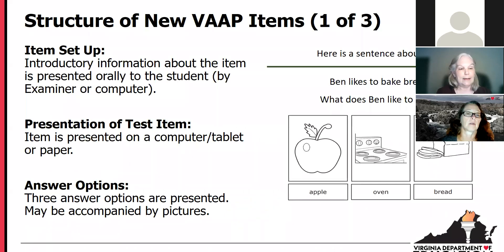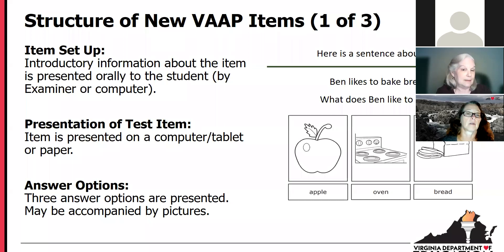We're going to start with a reading item, but the structure of the VAP items is similar regardless of content. On the left-hand side of the screen, you'll see the template for each of the items. There's an item setup — text that is either read to the student by the computer or a human reader, the test examiner — which provides introductory text about the item and directs the student's attention. Then there's a presentation of the test item, and then the answer options. For example: 'Here is a sentence about Ben. Ben likes to bake bread. What does Ben like to bake? Apple, oven, bread.' The examiner can point to those options as he or she reads them.